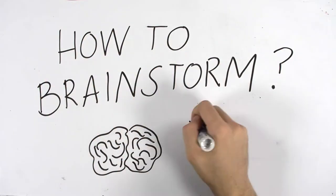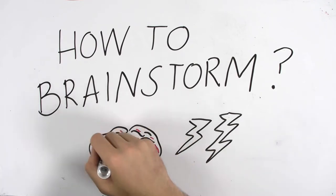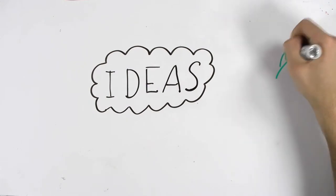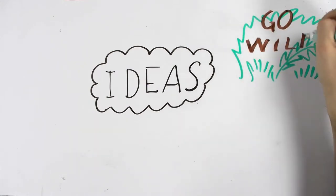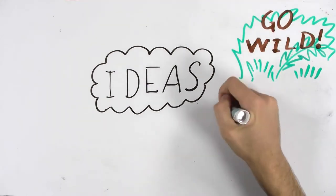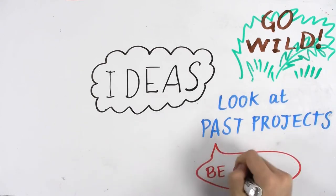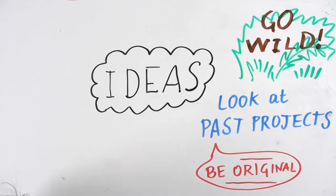How to brainstorm efficiently and select new ideas: Start by letting your imagination go wild through all ideas, even the craziest ones. If you have no inspiration, look at past projects, but be careful to use them to be original and not repeat other teams' projects.